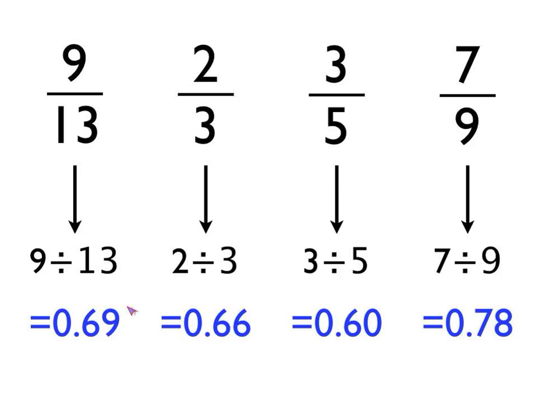I've converted each fraction into its equivalent decimal number. 9 thirteenths is 9 divided by 13, which is 0.69 to 2 decimal places. Notice that in the answers here I've always rounded them to 2 decimal places. You can choose how many decimal places you want to round to, but that seems sensible for this question. 2 thirds is the same thing as 2 divided by 3, which to 2 decimal places is 0.66 and so on. So I've actually done the division sums and converted the fractions to their equivalent decimal numbers.